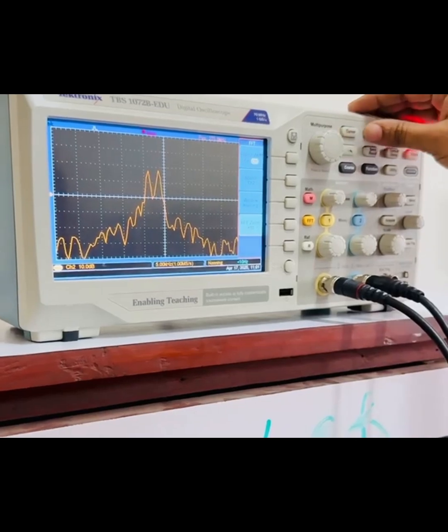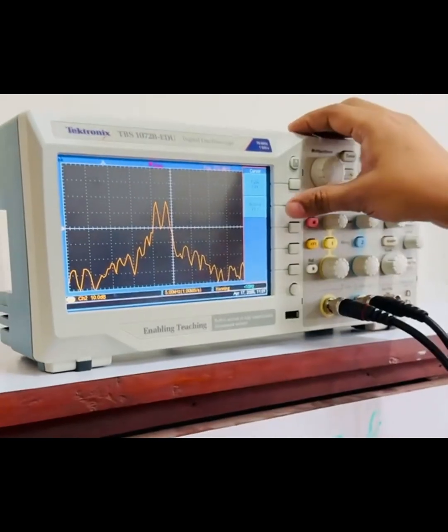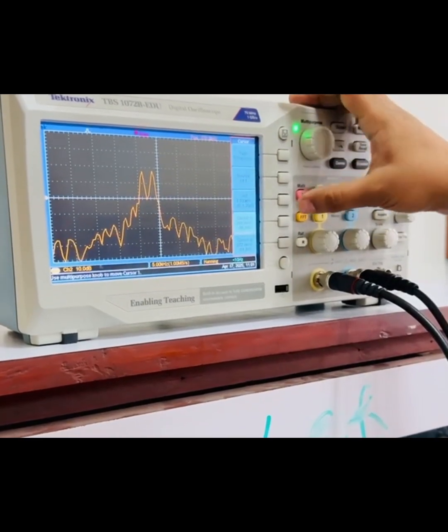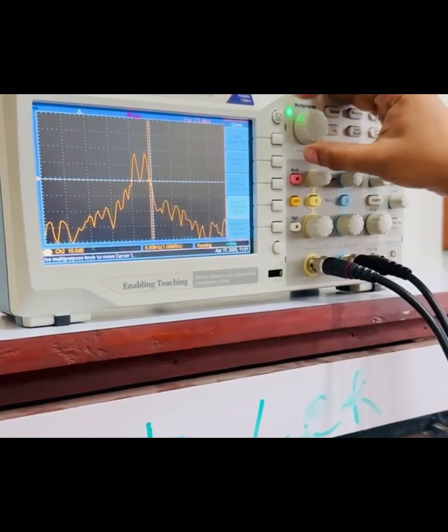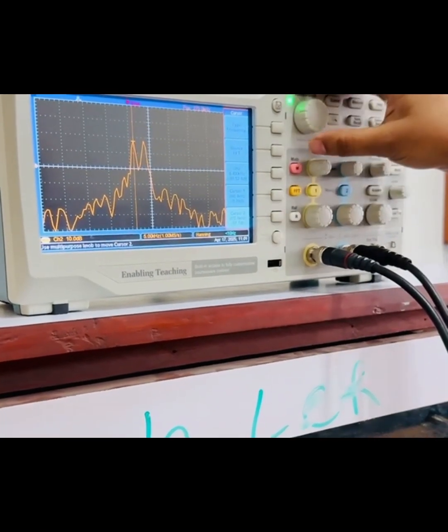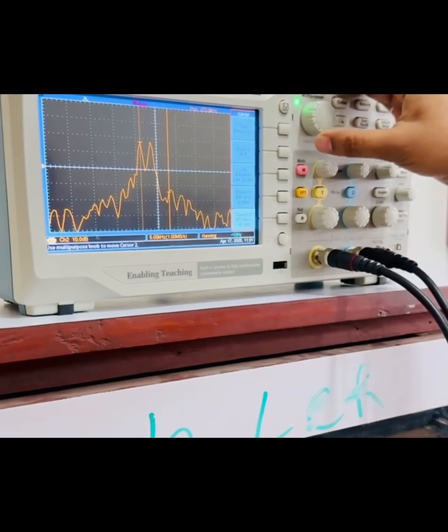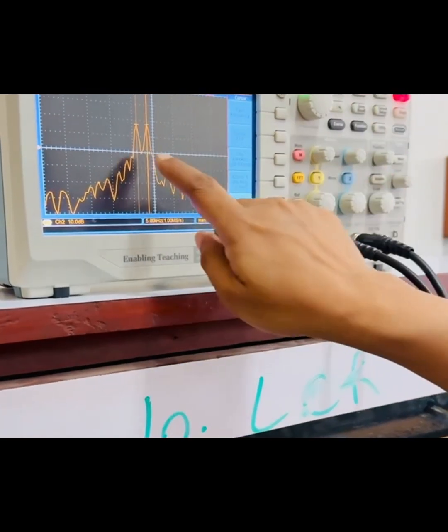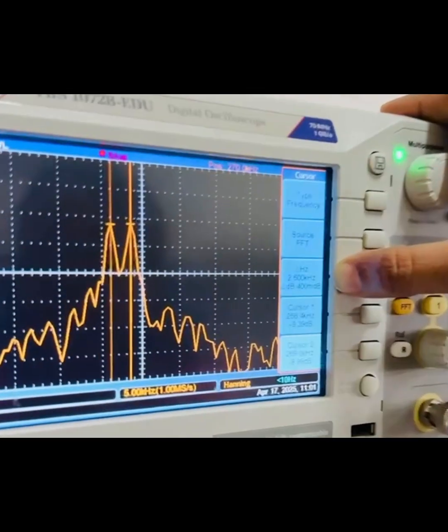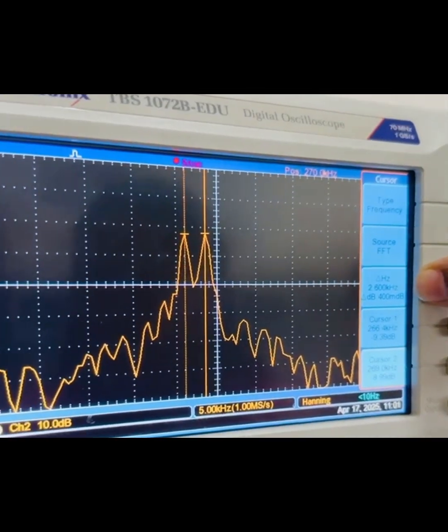The procedure for measuring the bandwidth is the same. Press cursor, source should be FFT, type should be frequency, and adjust cursor 1 at the peak of lower sideband and cursor 2 at the center of upper sideband. Then the difference between these two cursor positions is the bandwidth of DSB, that is 2.6 kilohertz.